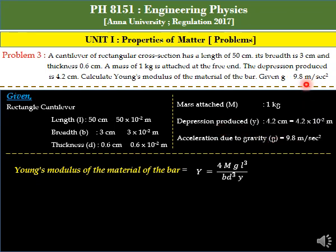Acceleration due to gravity, small g, is given as 9.8 meter per second squared. This is a constant value.